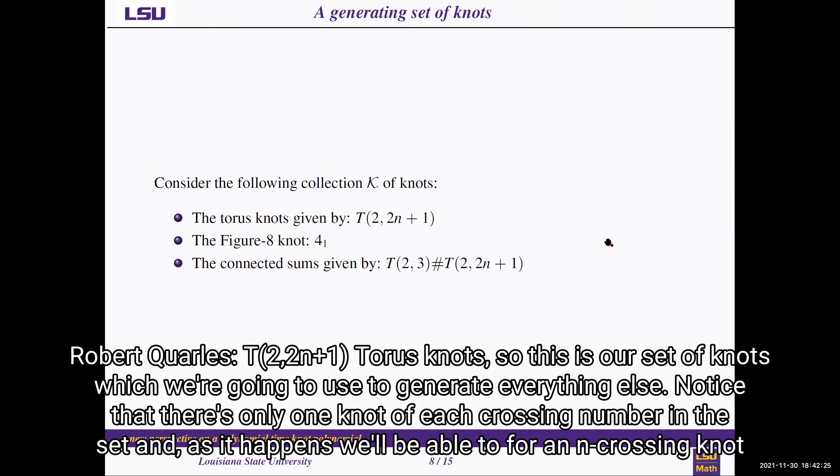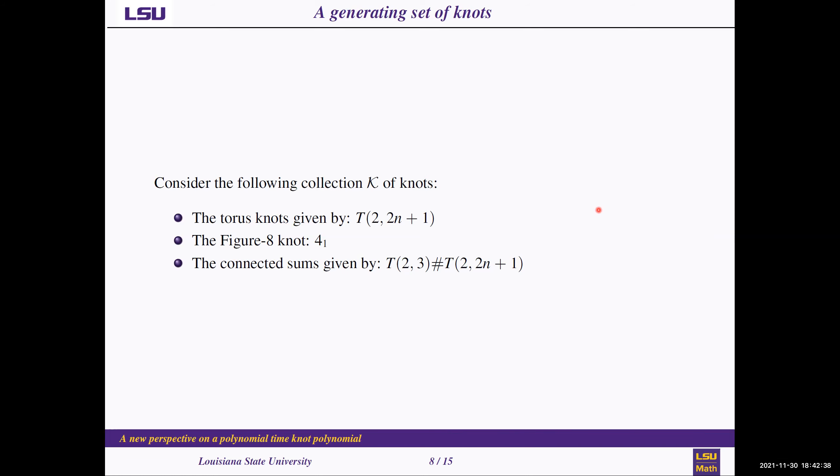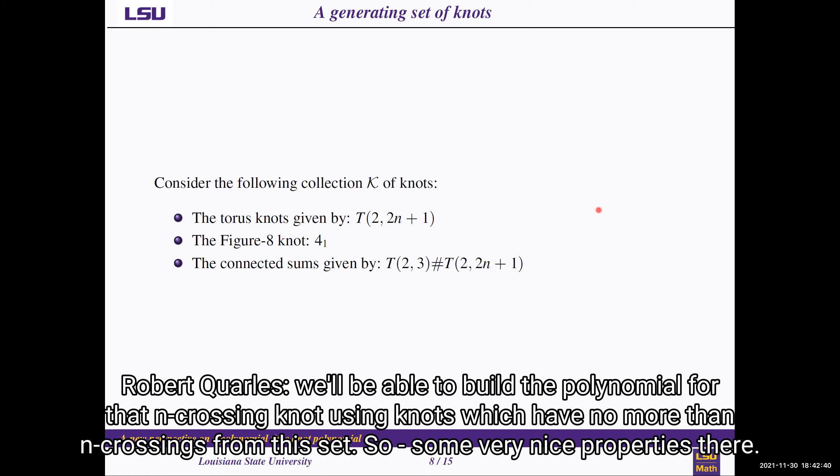So this is our set of knots, which we're going to use to generate everything else. Notice that there's only one knot of each crossing number in this set. And as it happens, for an n-crossing knot, we'll be able to build the polynomial for that n-crossing knot using knots which have no more than n crossings from this set. So some very nice properties there.